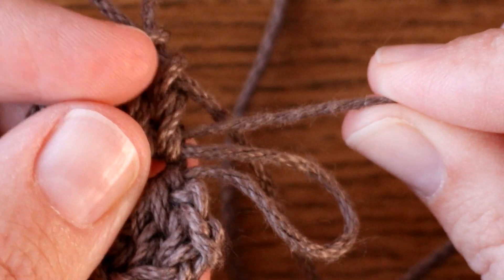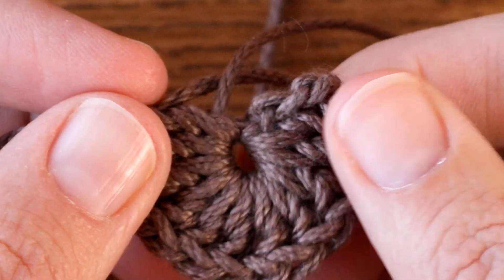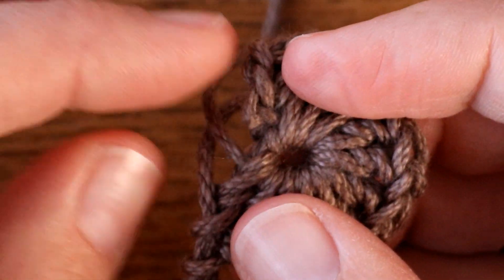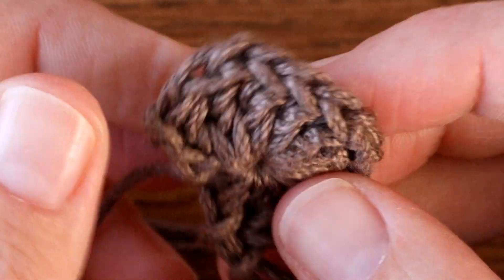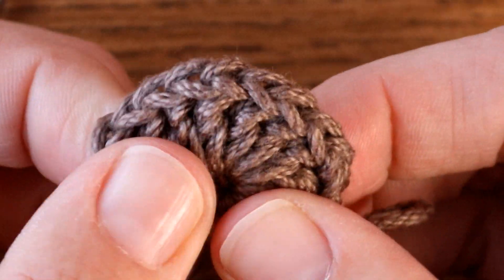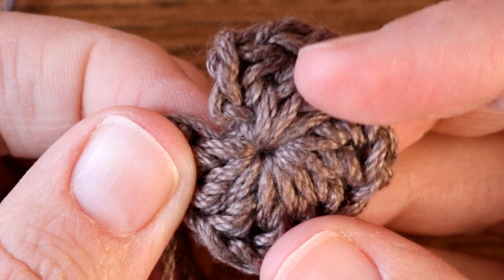Now when I pull the tail that one disappears, and if I pull the tail nice and tight it will tighten up significantly and we'll get rid of that gap that was in the middle, closing up our magic loop.